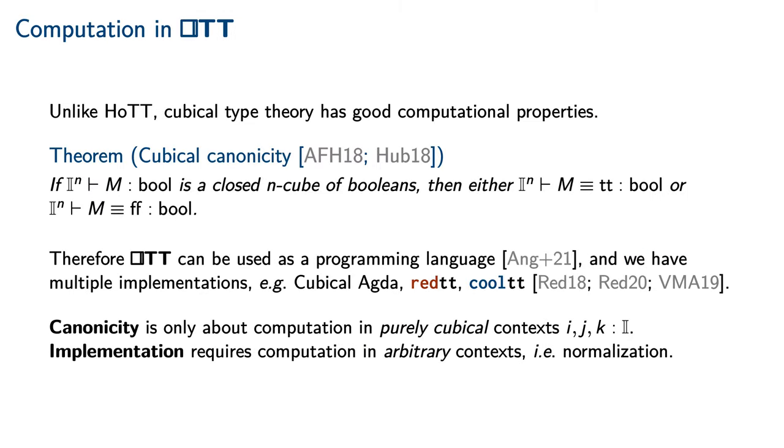Cubical Type Theory is inspired by homotopy type theory, but unlike its forebear, cubical type theory has good computational properties. In particular, if M is a closed n-cube of booleans, then either M is the true constant or M is the false constant. This property, called cubical canonicity,